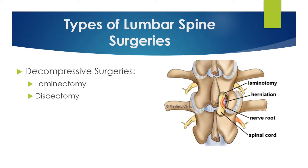Types of lumbar spine surgeries. There are different kinds of lumbar spine surgeries for different kinds of indications. Decompressive surgeries include laminectomy and discectomy, and they usually occur together. Laminectomy means the removal of the lamina in the spinal vertebrae, as shown here in the lumbar spine.